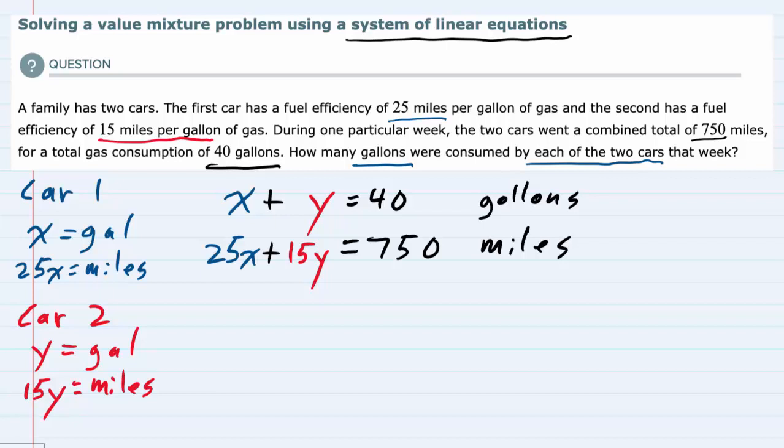For this example, I'm going to use elimination. In order to work with smaller numbers, I'm going to take the first equation and multiply it by minus 15.